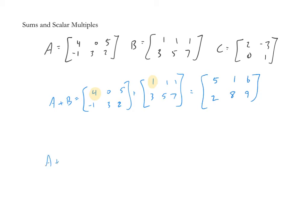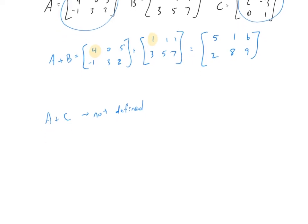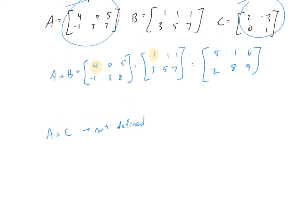If we try to add A plus C, that sum is not defined because matrices A and C have different sizes. Two matrices must be the same size to add or subtract them. For scalar multiples, 3 times matrix B multiplies every entry by 3: 3, 3, 3 across the top and 9, 15, 21 across the bottom.